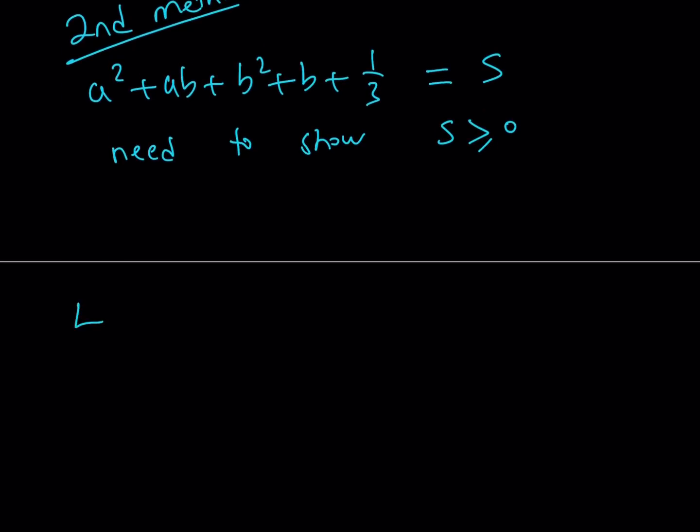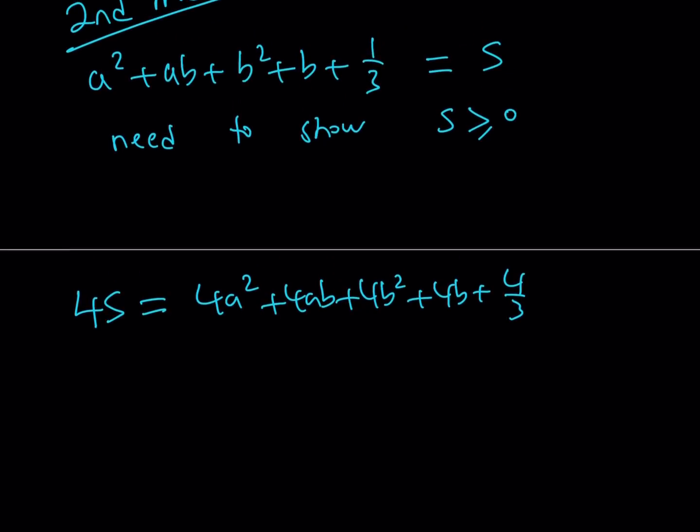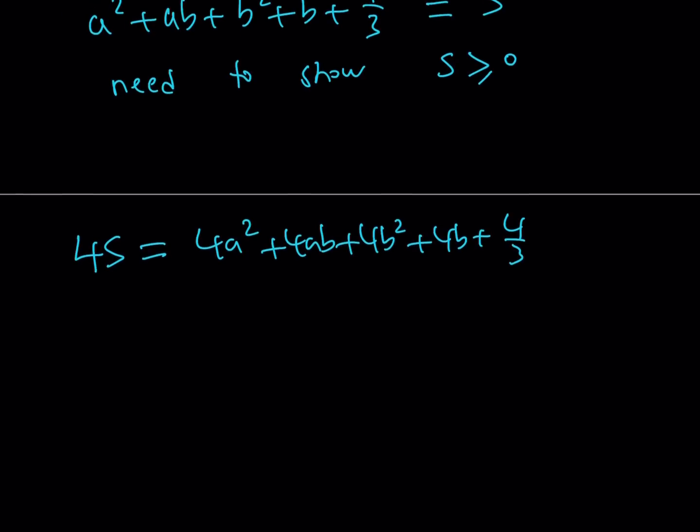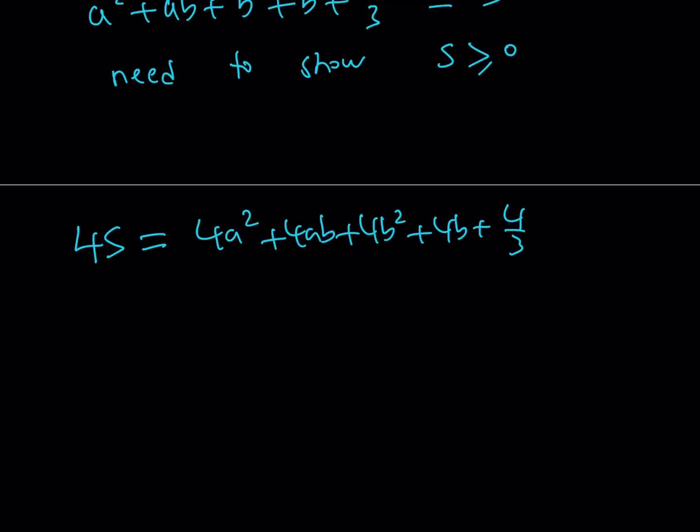So let's go ahead and do the following. Let's multiply both sides by 4. So 4s is going to give us 4a squared plus 4ab plus 4b squared plus 4b plus 4 thirds. Now, you might be asking, why am I multiplying by 4? Well, that's a general strategy that we use a lot of times. If you have a polynomial with coefficients of 1, like in this case, we want to multiply by 4 because multiplying by 4, it makes it easier to complete the square.